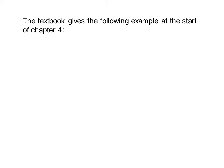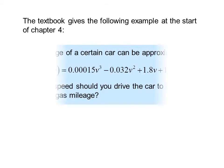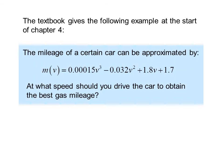The textbook gives the following example at the start of Chapter 4. The mileage of a certain car can be approximated by m of v equals .00015v³ minus .032v² plus 1.8v plus 1.7. At what speed should you drive the car to obtain the best gas mileage?